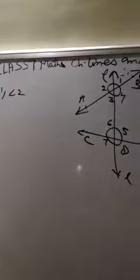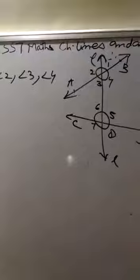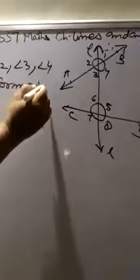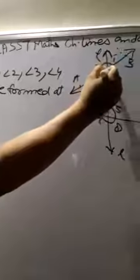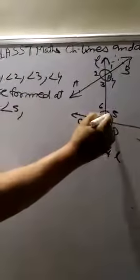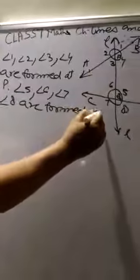Angles 1, 2, 3, 4 are formed at point P. Angles 5, 6, 7, 8 are formed at point Q.